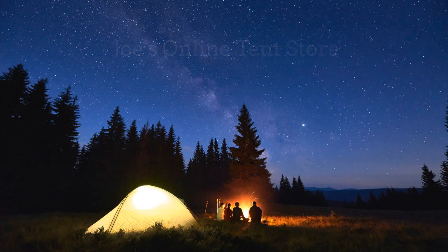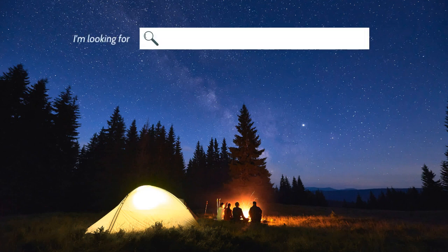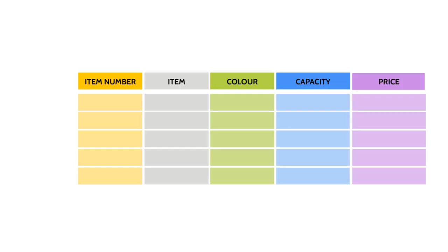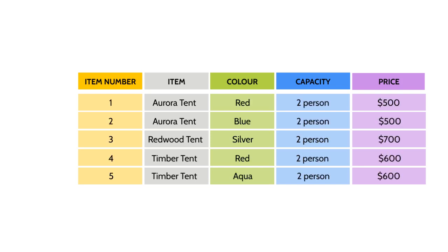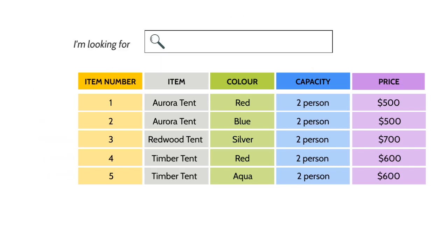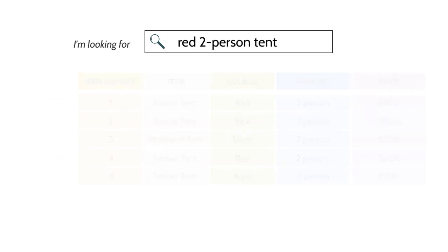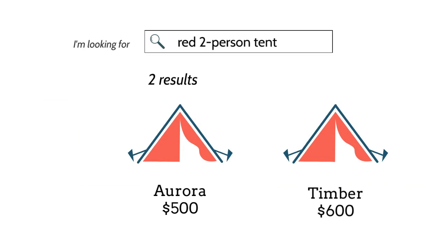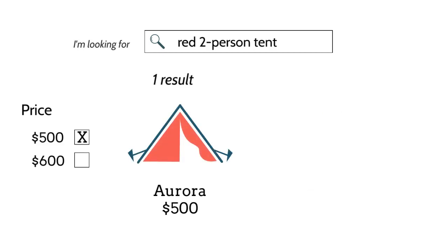Imagine you're going camping with a friend and you need a tent. You're keen on buying a red one. So you use 'red two-person tent' as your keyword search on Joe's website. Joe has created a database that contains all his tent store inventory, organized and labeled using fields and records. When you search for 'red two-person tent,' your keywords are matched to records in Joe's inventory. The database sends the results to your screen. You get two results for a two-person red tent, but your budget is only $500. Very often, databases have limiters that allow you to narrow your search. Joe's tent store has a price limiter. You use it to select the tent you can afford. Joe's online tent store database finds one tent that matches your criteria.